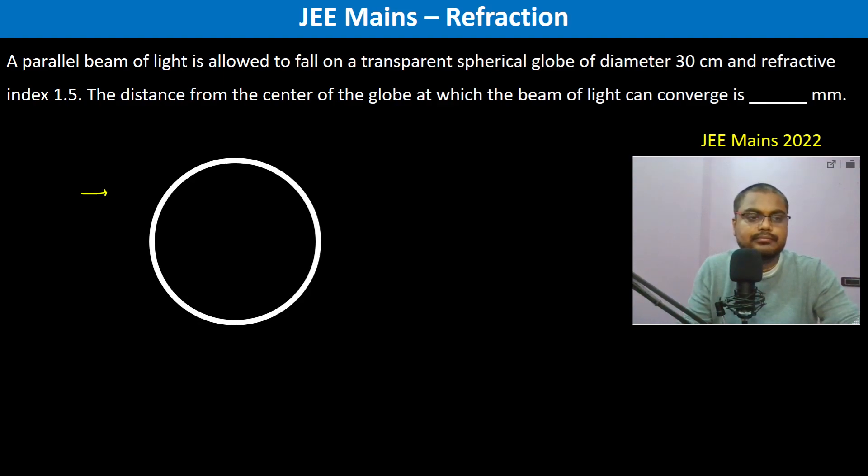A parallel beam of light is allowed to fall on a transparent spherical globe of diameter 30 cm and refractive index 1.5. The distance from the center of the globe at which the beam of light can converge. So first, here is the refraction, the first refraction.